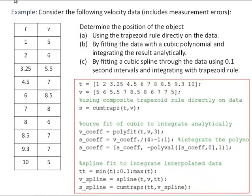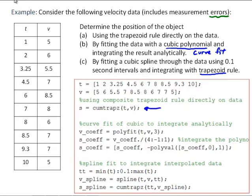Let's look at a more detailed example of calculating the integral of some data using MATLAB. Here's some velocity data as a function of time that is not equally spaced, and we're told this data includes some measurement errors. We'll determine the position of the object using three methods: first, using the TRAPZ rule directly on the data; second, fitting the data with a cubic polynomial and integrating that result analytically; and third, fitting a cubic spline to generate interpolated data on 0.1 second intervals and then integrating that with the TRAPZ rule.